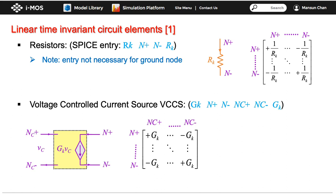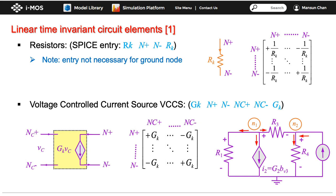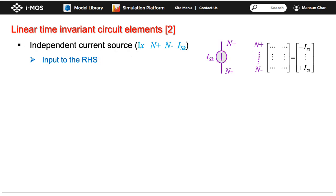For a linear voltage-controlled current source (VCCS), the SPICE entry includes N+ and N− where the source is connected, and Nc+ and Nc− where the controlling branch voltage comes from. For an independent constant current source, it is simply added to the right-hand side of the matrix equations at the rows corresponding to the nodes it connects to. These are all the elements in the example circuit, and we can now verify the matrix entries with the corresponding elements.